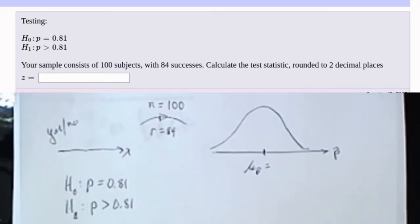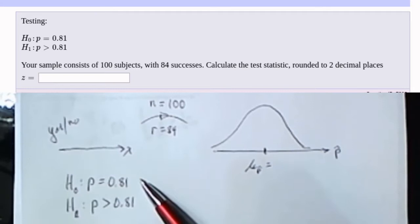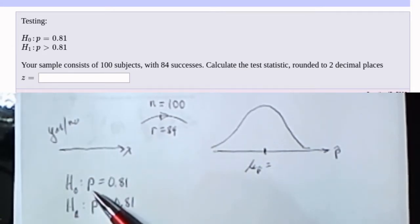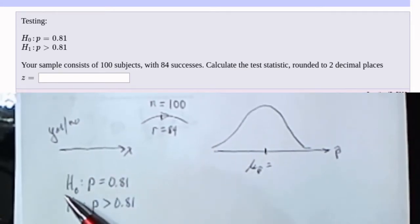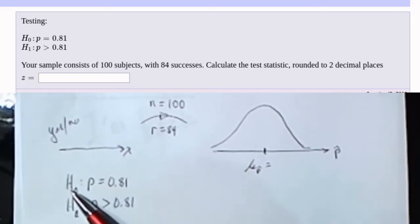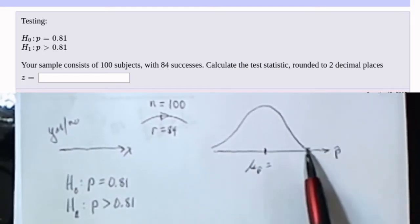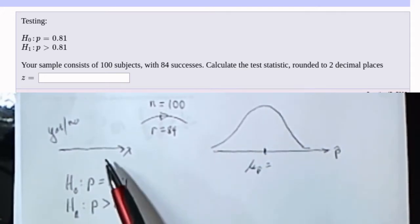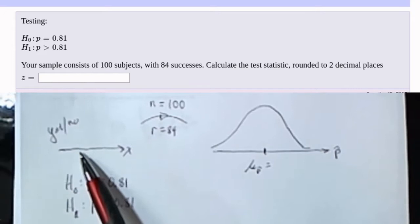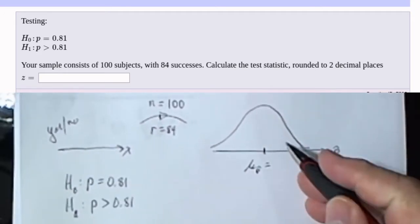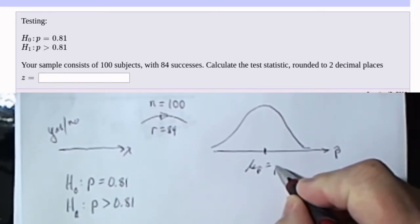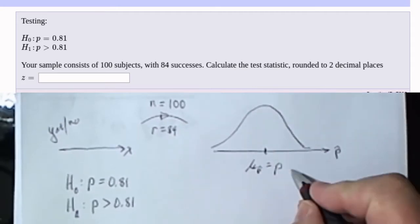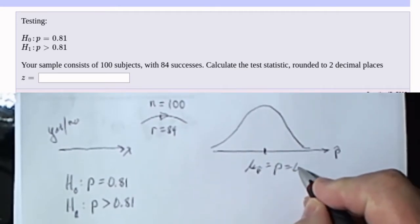In a hypothesis test, we assume that the null hypothesis is true, and then calculate some probabilities based on that. So assuming that this is what p is, we know that the distribution of the sample proportions is going to be the proportion of the original population. So this is going to be that p. In this case, that's 81%.